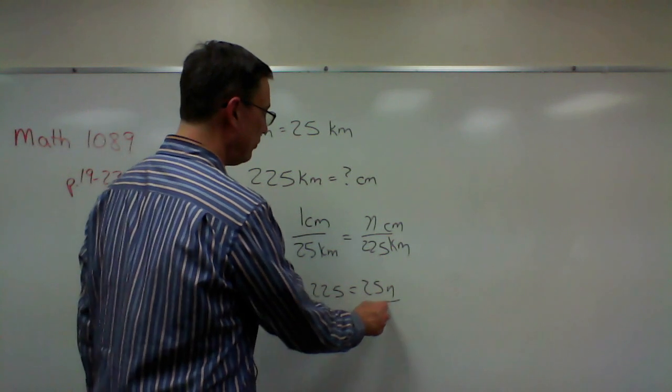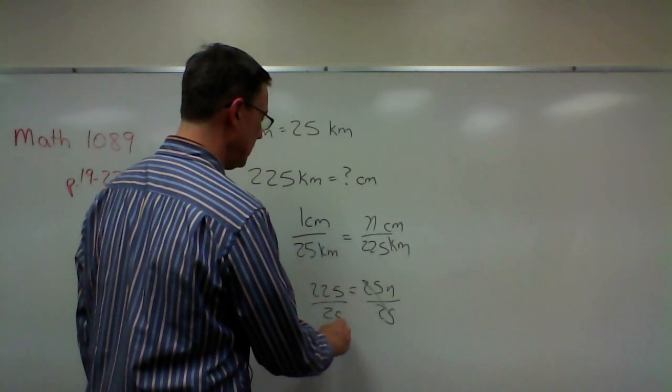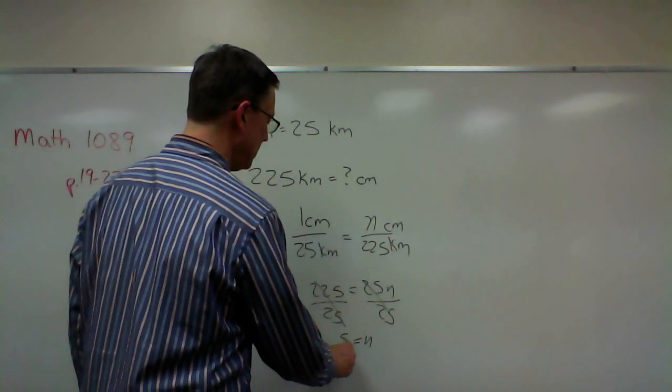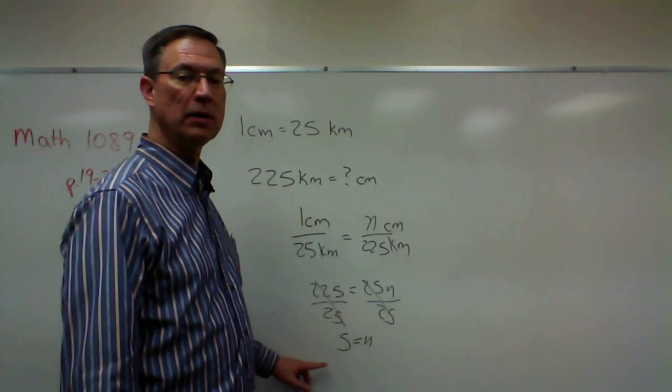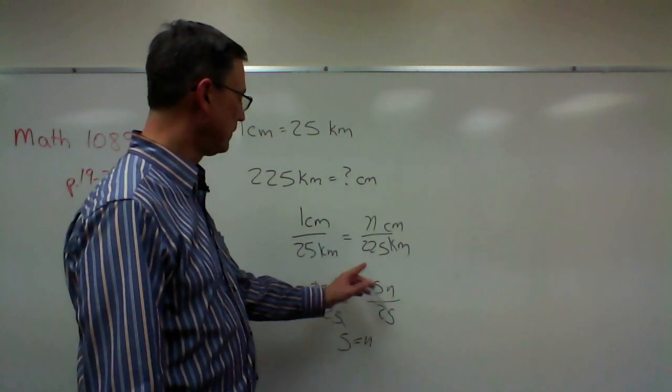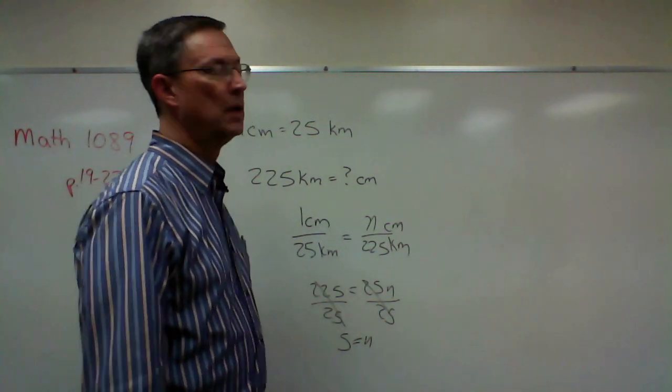And then to solve for N, we'll divide by 25, do the same thing on both sides. And now we can see that N equals 5. I don't know if that's still on the screen. So N equals 5 because we divided this by 25.